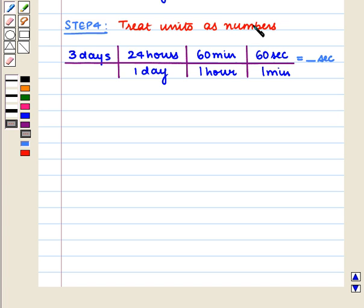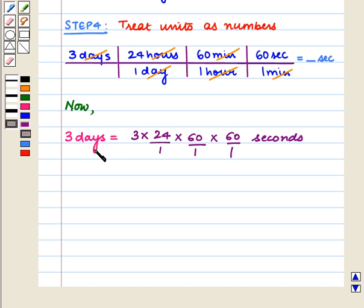Our next step is to treat units as numbers — that is, to cancel the units so that we are left with only the desired unit. If we cancel out the linking units and initial units: days cancel with days, hours cancel with hours, minutes cancel with minutes. We obtain the desired unit, seconds. So now, 3 days equals 3 × 24/1 × 60/1 × 60/1 seconds.